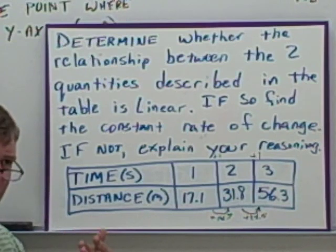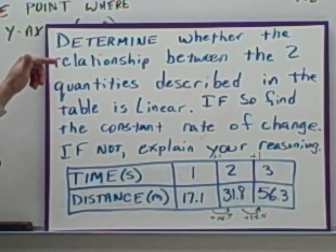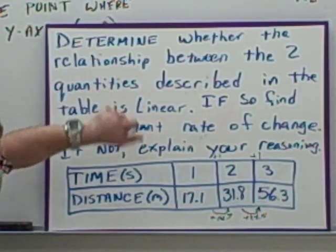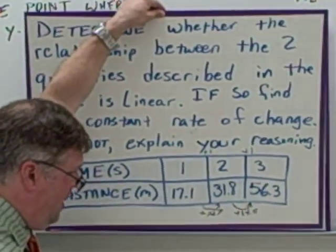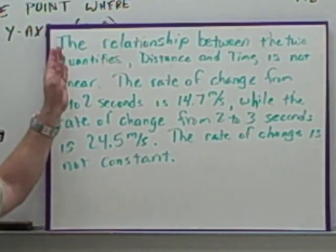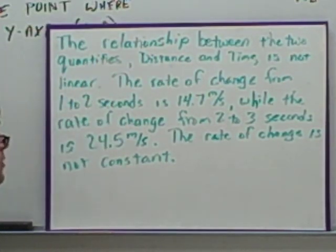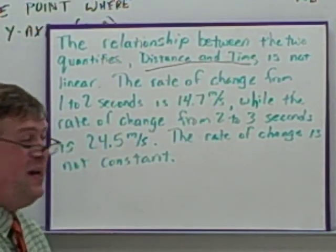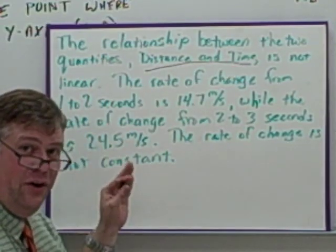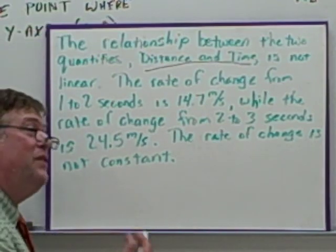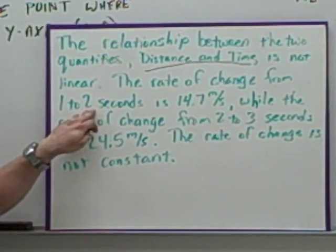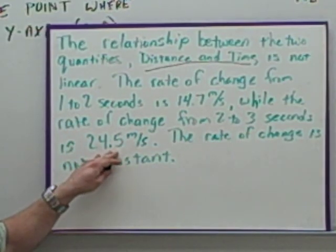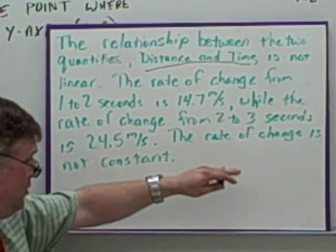Well, remember CSRQ: complete sentences restating the question. What's the question here? If not, explain your reasoning. So we're saying it is not a relationship that is linear. So let's take a look at my answer and break it down. The relationship between the two quantities, remember that was part of the question there, distance and time. Notice how I wrote in the X and Y titles into my explanation. Is not linear. There's my answer. It's saying is not linear, that's the answer. But I have to explain further. The rate of change from one to two seconds, that first part there, was 14.7 meters per second, while the rate of change from two to three seconds was 24.5 meters per second. They're not the same. So the rate of change is not constant.